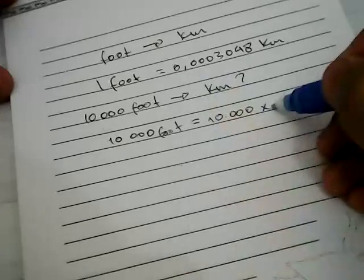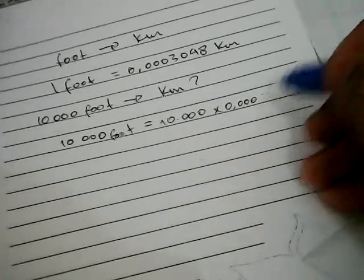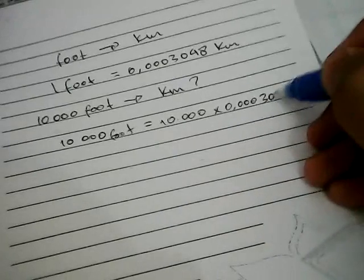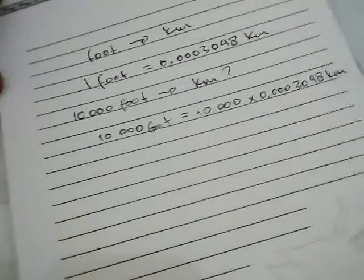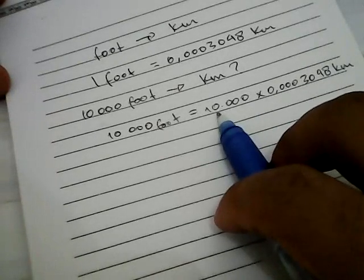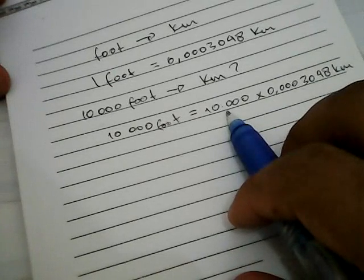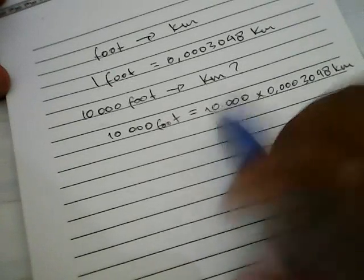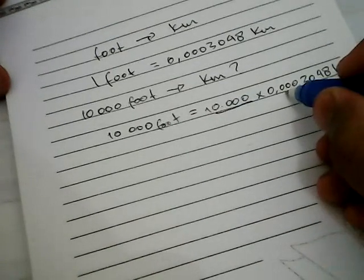We have four zeros after the decimal point, so we move the decimal over. The result of the conversion: 10,000 feet to kilometers is 3.048 kilometers.